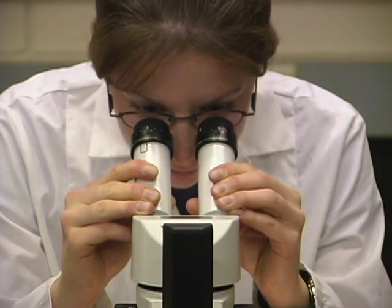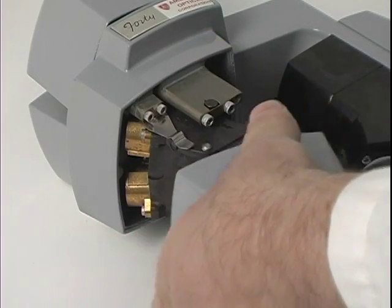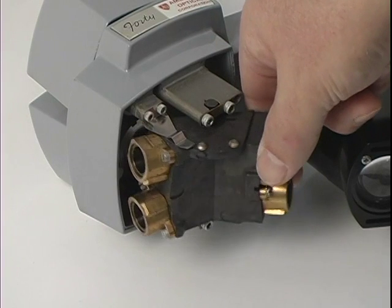Stereo microscopes are all binocular because they must have two ocular as well as two objective lenses to create three-dimensional or stereoscopic images.